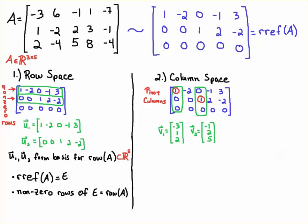U1 and U2 form a basis for the row space, and notice that they are five-dimensional vectors. So the row space is a subspace of R5. If we call the RREF of A the matrix E, then the nonzero rows of E give you the row space of A, which is denoted typically row(A).